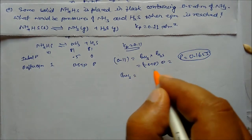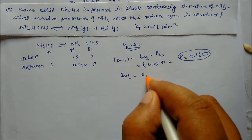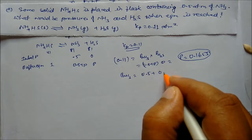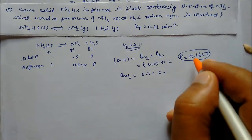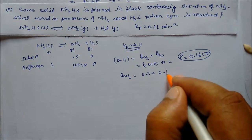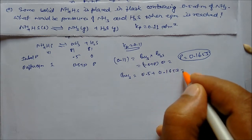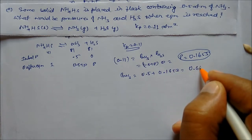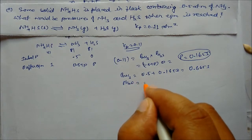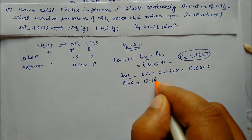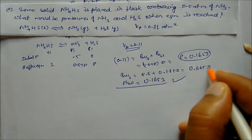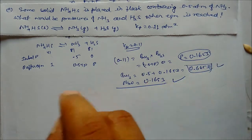Therefore, the pressure of ammonia at equilibrium is 0.5 + 0.1653 = 0.6653 atm, and the pressure of H2S at equilibrium is 0.1653 atm. These are the required answers for this problem.